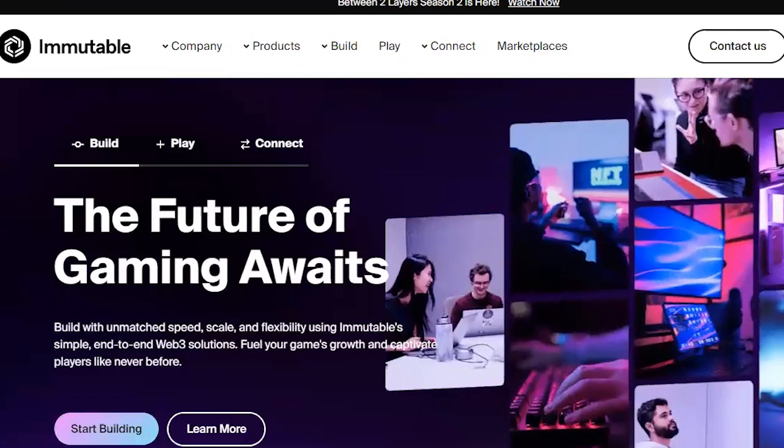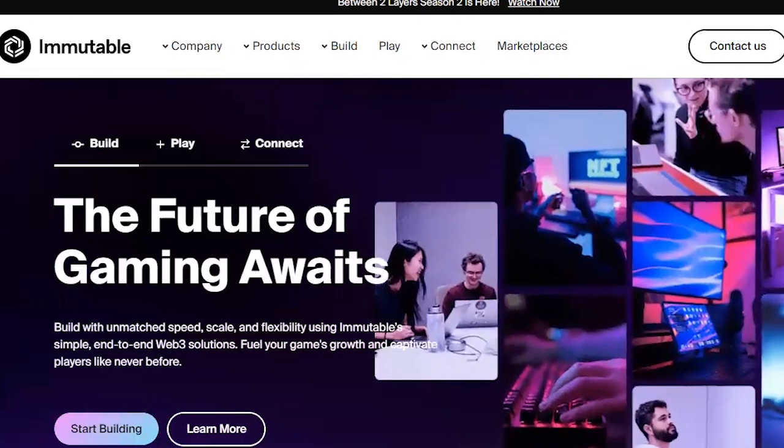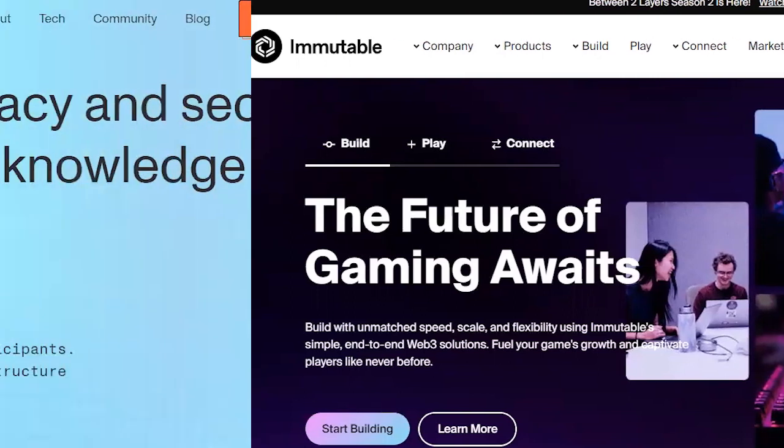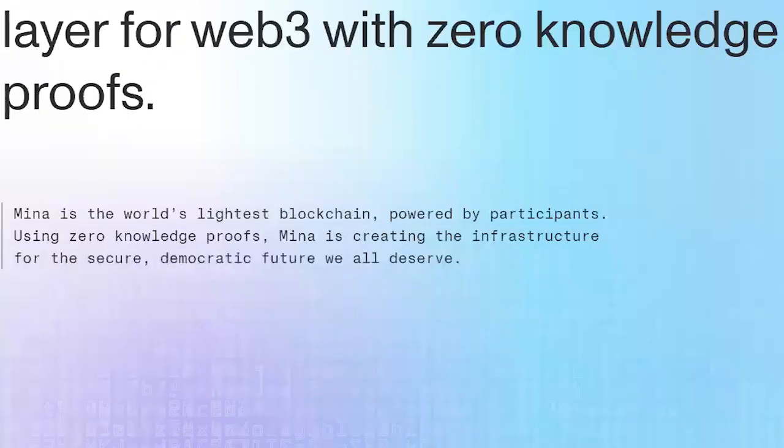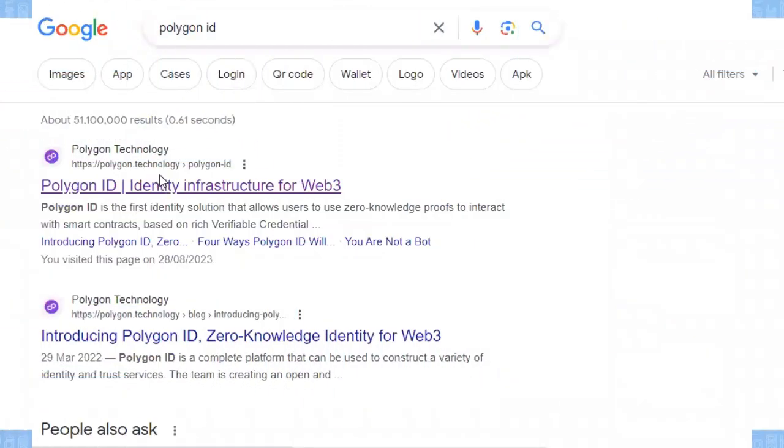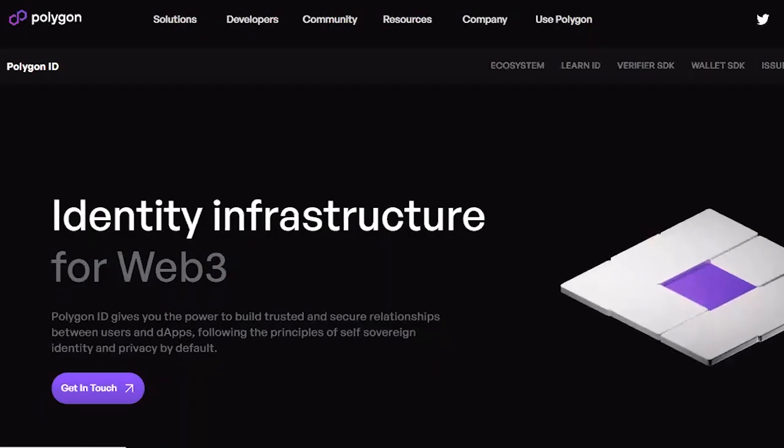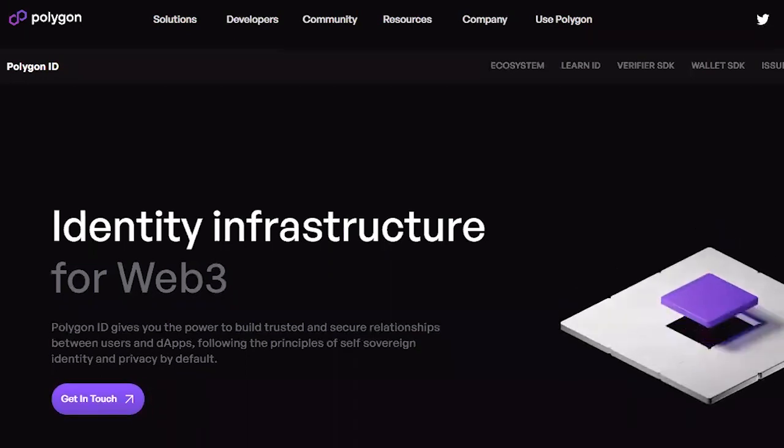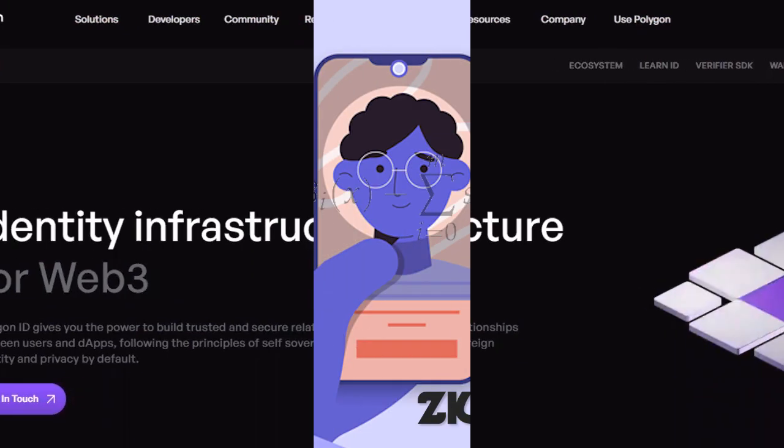Immutable X, which is a large-scale NFT platform for games which raised over 200 million dollars in funding in 2022, uses ZK-SNARKs. Mina Protocol, the world's lightest blockchain, is powered by ZK-SNARKs.